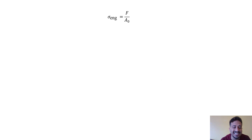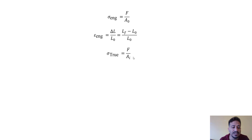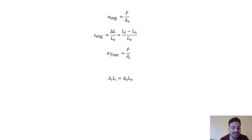Now we are going to discuss this in numerical form. The engineering stress of any material is calculated by dividing the force by the initial area of the sample. The engineering strain is calculated by finding delta L, which is the difference between the final and initial lengths divided by the initial length. The true stress is the force divided by the instantaneous area. According to the conservation of volume of the sample during the test, the initial area multiplied by the initial length equals the instantaneous area multiplied by the instantaneous length.